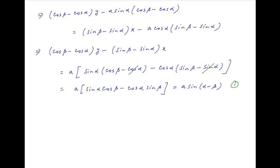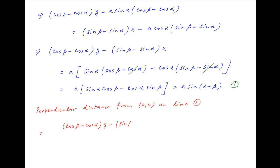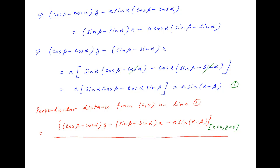Let's call this Equation 1. Now the perpendicular distance from the origin to line 1 is equal to the absolute value of [(cos β minus cos α)·y minus (sin β minus sin α)·x] evaluated at x equals 0 and y equals 0, divided by the square root of the sum of squares of the coefficients of x and y — that is, √[(cos β minus cos α)² plus (sin β minus sin α)²].